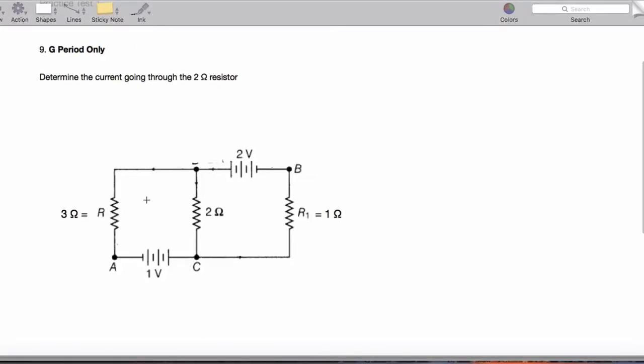This is a Kirchhoff's law problem. Rules: the long end is the positive part, the short is the negative part of the battery. The other thing we're going to do is send a loop of current around each loop, and each loop gets its own respective current.